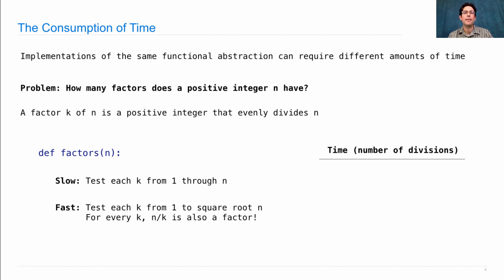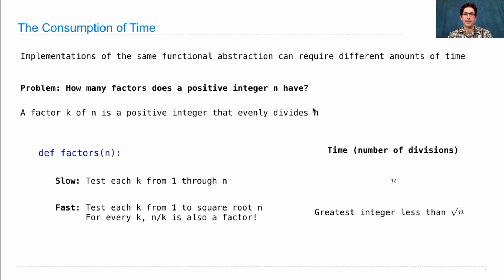The time we'll measure is the number of divisions — how many times do we have to try dividing n by some k to figure out whether it's a factor or not? The naive approach does n divisions, one for each value of k that could possibly be a factor. The clever approach does around the square root of n — actually the greatest integer less than the square root of n — which is often a much smaller number. So if we're trying to find all the factors of 36, the naive approach looks 36 times, and the clever one only has to do five divisions.